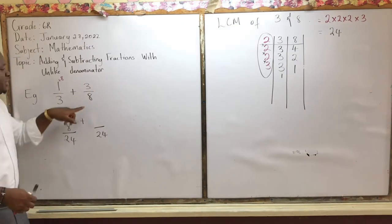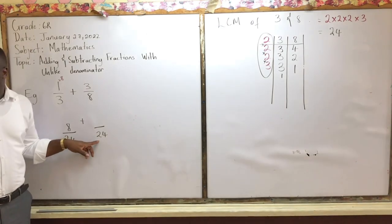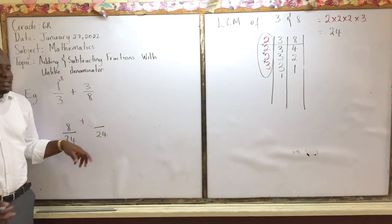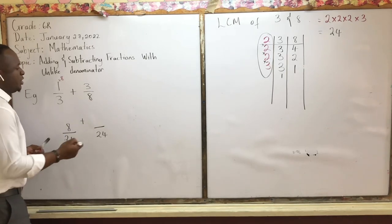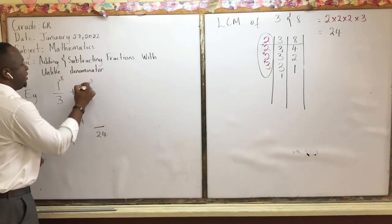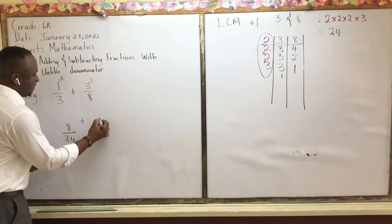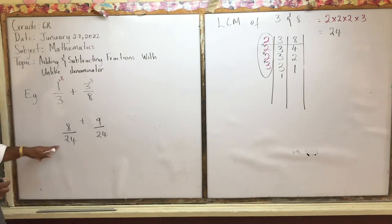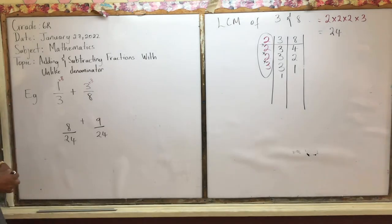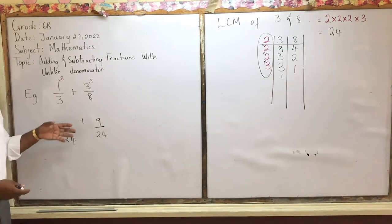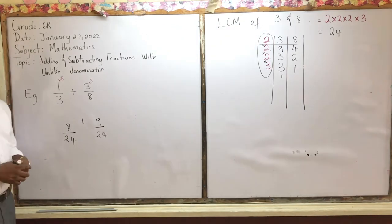Now on the other side, how many times can eight go into 24? Three times. We multiply the numerator three by three: three times three is nine. So three eighths equals nine over 24. We now have eight over 24 plus nine over 24. We could also use these equivalent fractions to compare which fraction is larger.